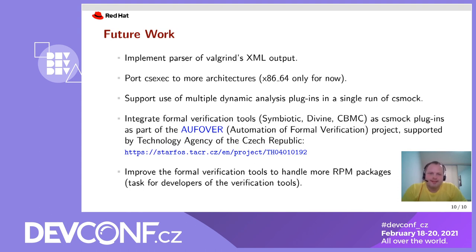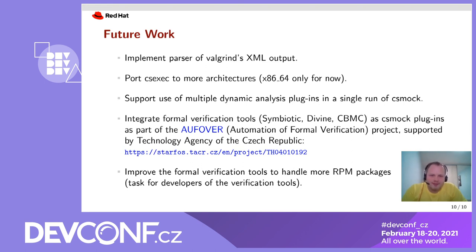This is going to be resolved by extending csmock to be able to run the check section repeatedly without a full rebuild of the package. The original motivation for this effort was formal verification of RPM packages, which we experimented with in the Alphaware project — automation of formal verification, a project supported by the Technology Agency of the Czech Republic. We are going to develop csmock plugins to integrate formal verification tools, namely Symbiotic, Divine, and CBMC. Based on our experiments, the formal verification tools will be improved to handle more RPM packages, but this is a task for the universities which develop the verification tools. That's all for me — thank you for listening, I'm ready to take questions.